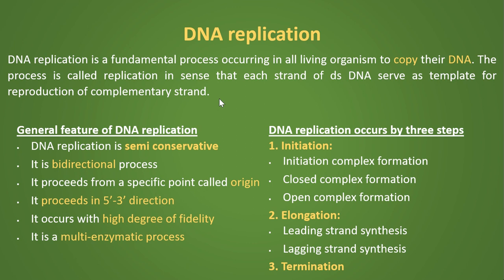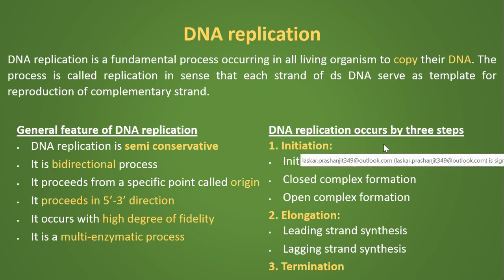The general features of this process are: DNA replication is semi-conservative. It is a bi-directional process. It proceeds from a specific point called the origin, and in prokaryotes that specific point is called ori-c. It proceeds in the 5' to 3' direction. It occurs with a high degree of fidelity, and it is regulated by multiple enzymes — so it is a multi-enzymatic process.